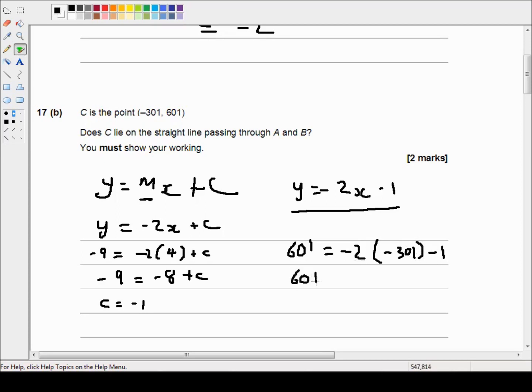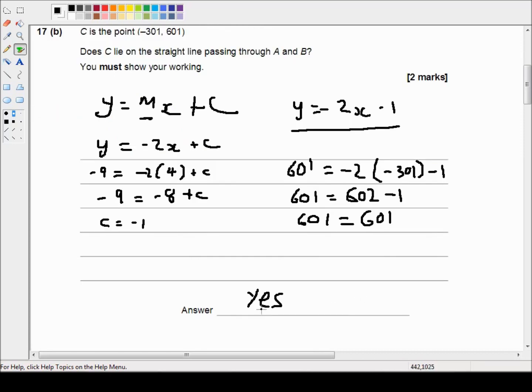So 601 equals, well 2 times 301 is 602, but it's a negative times a negative which is a positive, so this is positive 602 minus 1. And 601 really is 602 minus 1. So 601 equals 601. So the answer is again, yes.